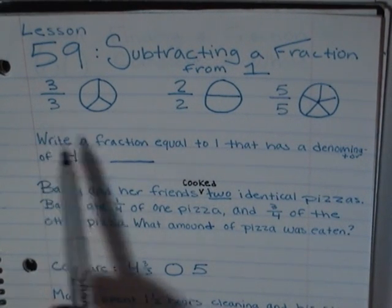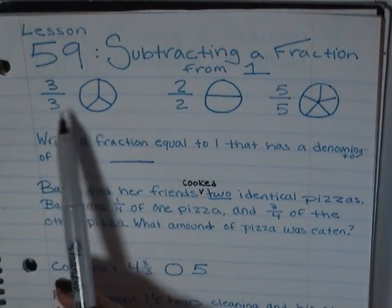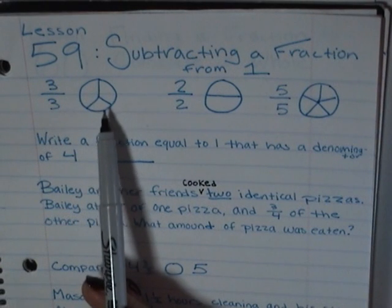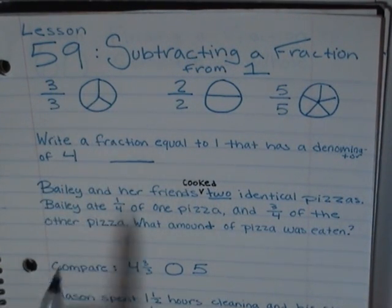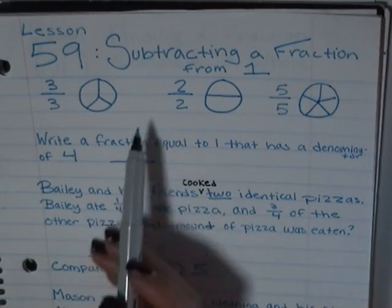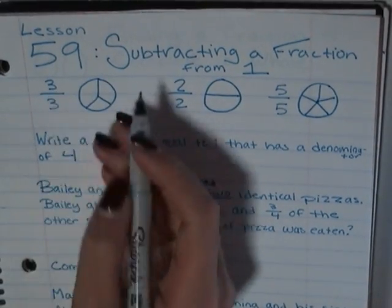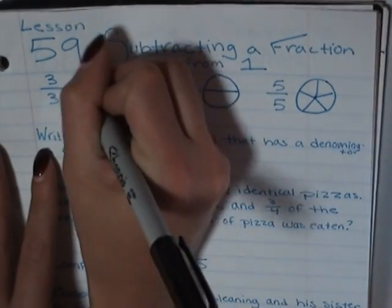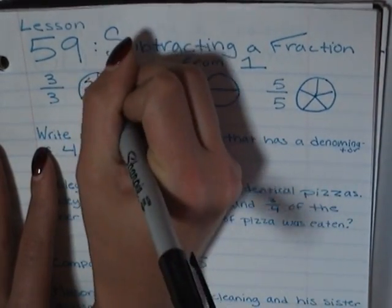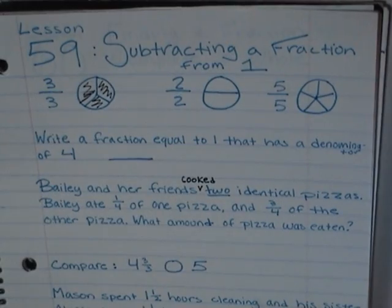If you look at three thirds, you see that the denominator tells us that it is out of three pieces, and the numerator tells us how many pieces we have. So in this circle, it's divided into three pieces, and our numerator tells us we have all three, then we have one whole.